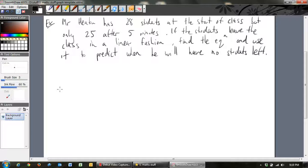Mr. Heaton has 28 students at the start of the class, but only 25 left after 5 minutes. So they're probably leaving because they're bored and that sort of thing, it's a horrible topic, linear graphs, so they're just leaving in that way. If the students leave the class in a linear fashion, in other words it's a straight line graph, it's a linear graph, find the equation and use the equation to predict when he will have no students left.